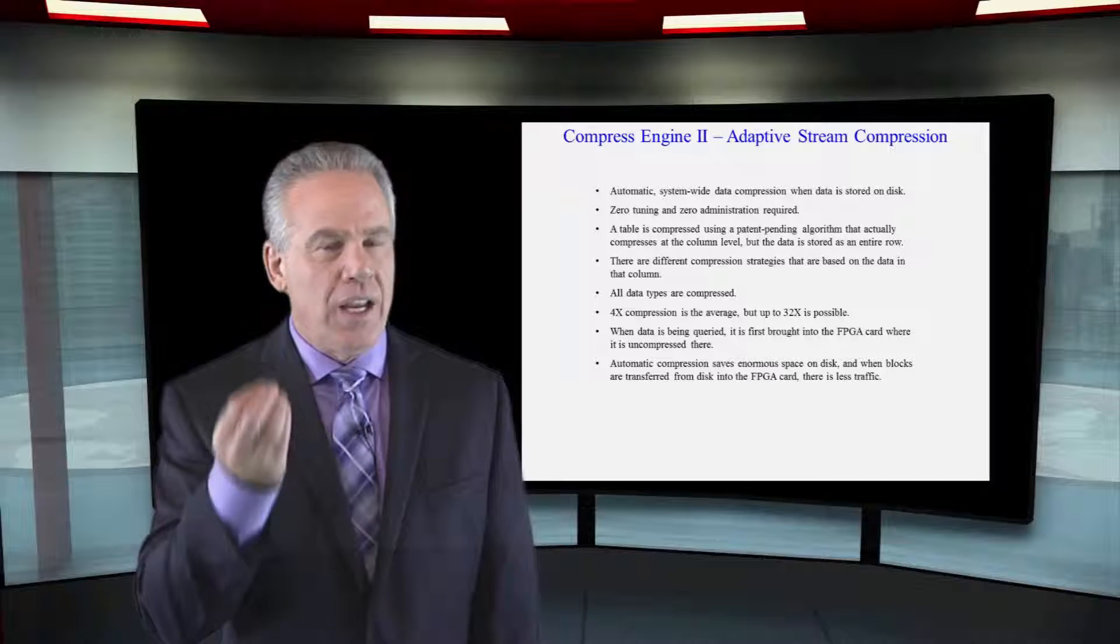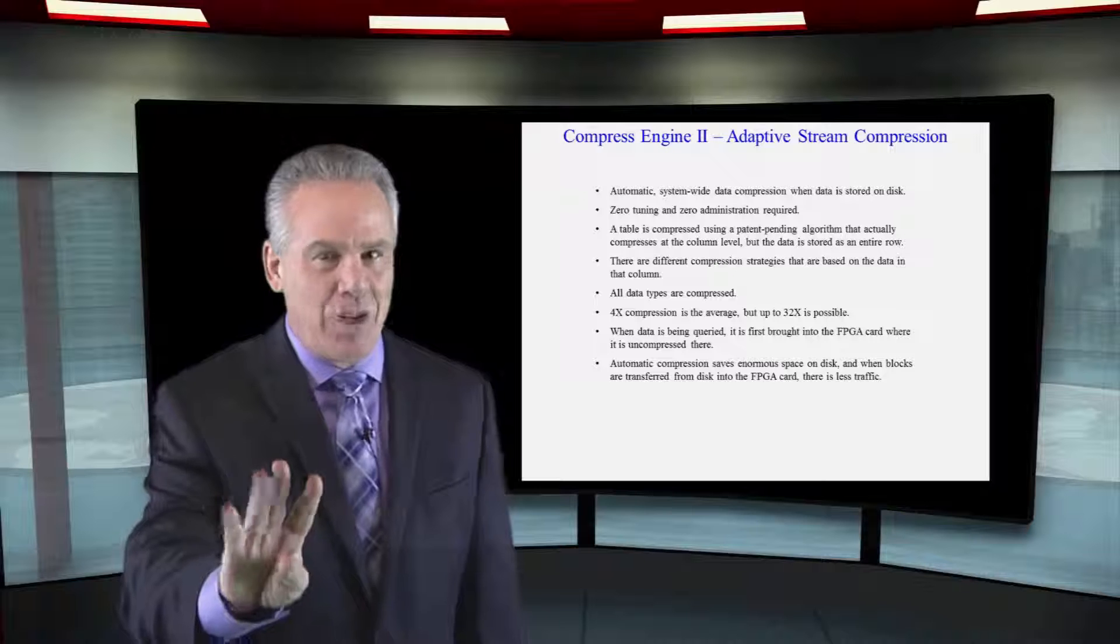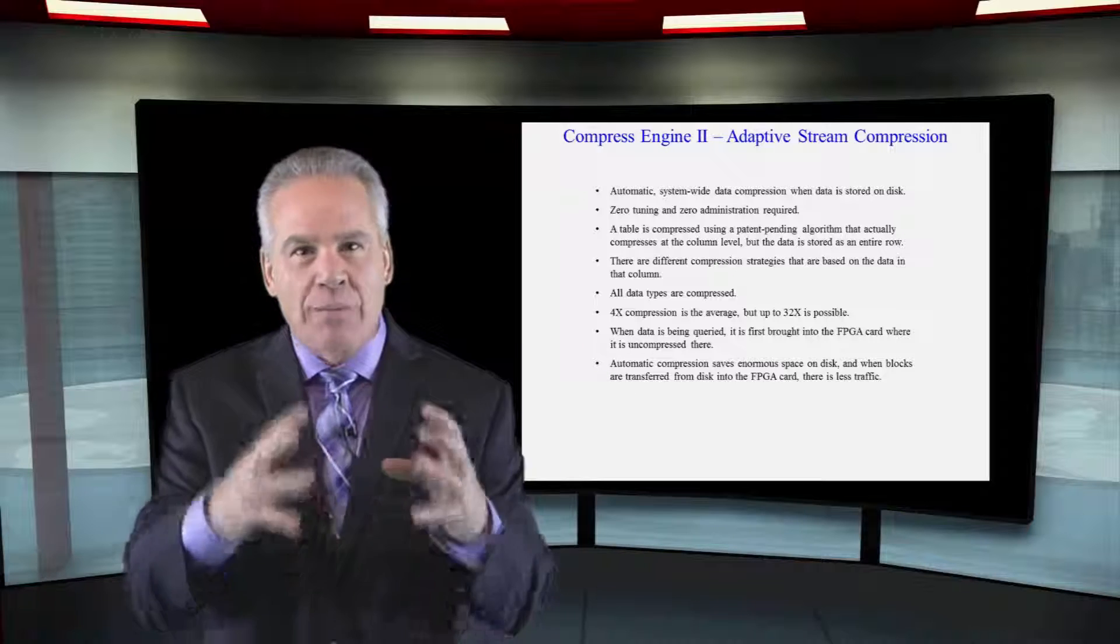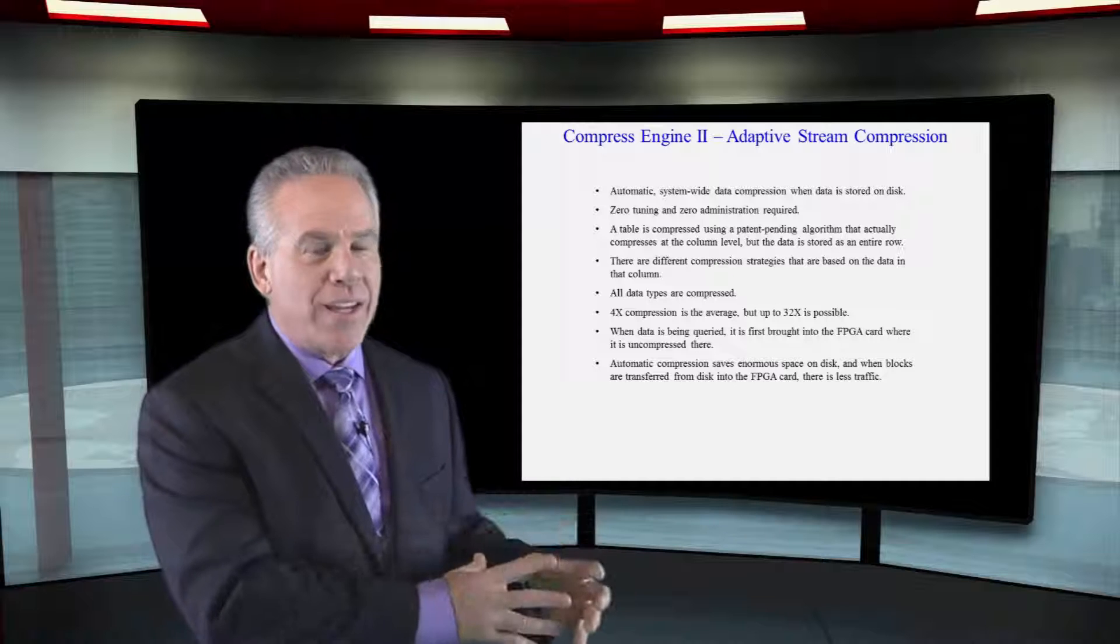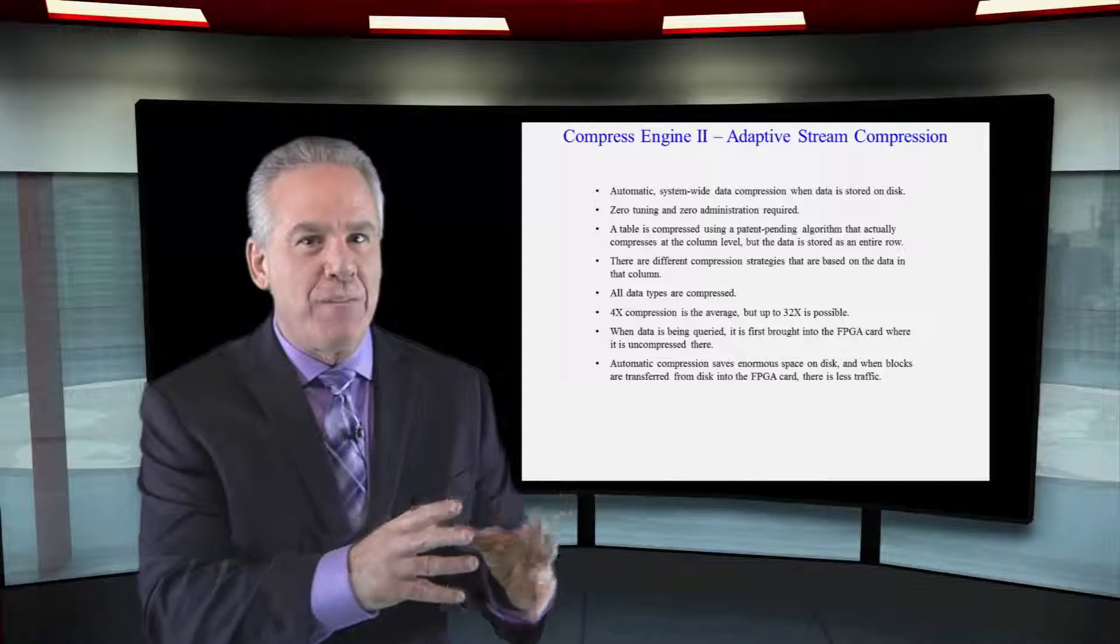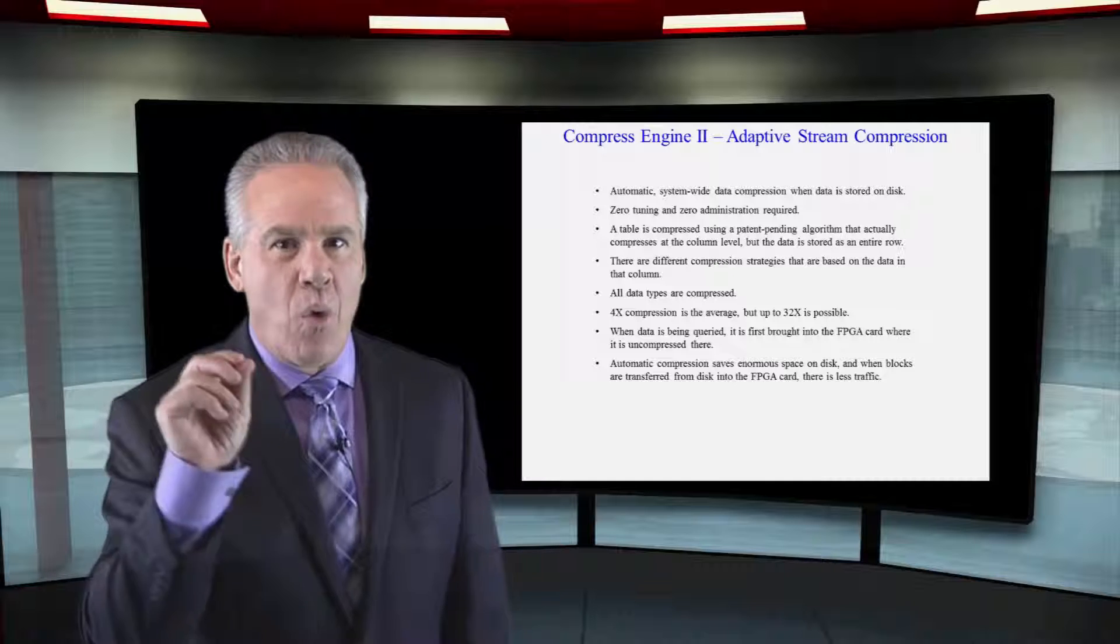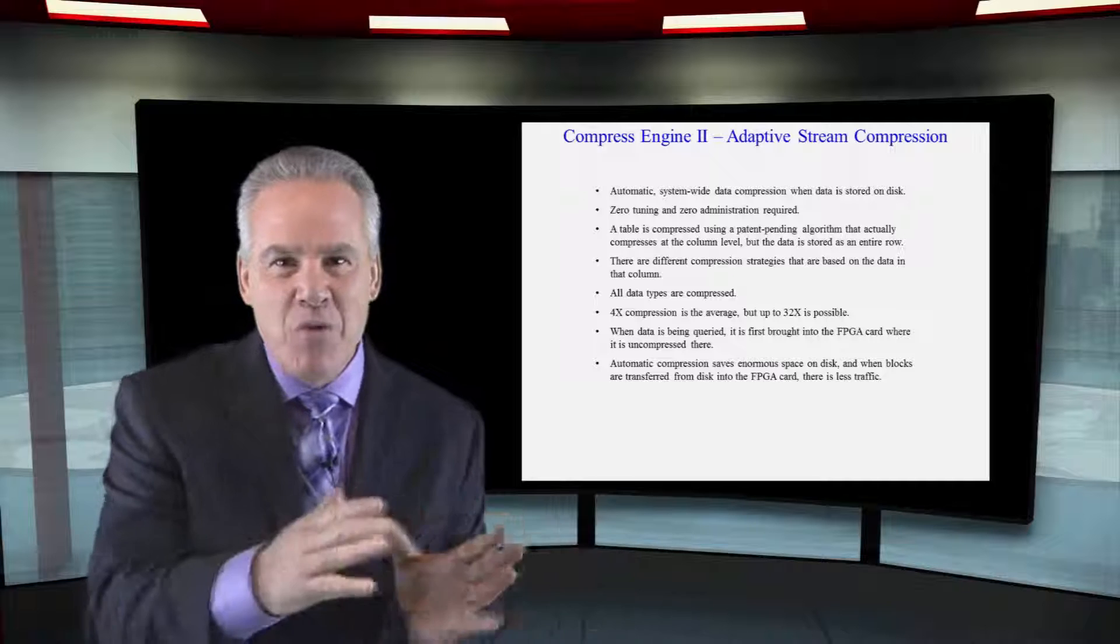This compresses each one of these tables by an average of four times, so each table's four times smaller when stored on disk. Then when they bring that block back to be processed, it goes through the FPGA card where at wire speeds it uncompresses. So even the data movement is about four to 32 times smaller.